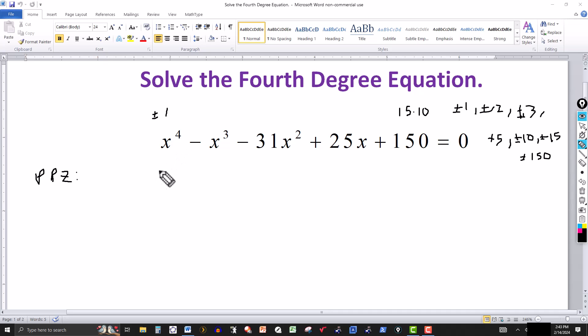Let's try negative 2. Negative 2 to the fourth power is 16. Negative 2 to the third power is negative 8, and then a minus makes it plus 8. Then negative 2 squared is 4 times 31 is 124, makes it minus. Then minus 2 here gives me minus 50, and then we have plus 150. Minus 50 and 150 gives me 100, then 100 and minus 124 is minus 24. And then 16 and 8 is 24, that's 0.